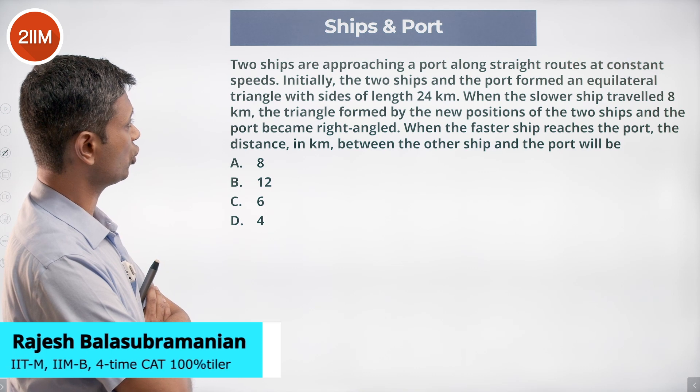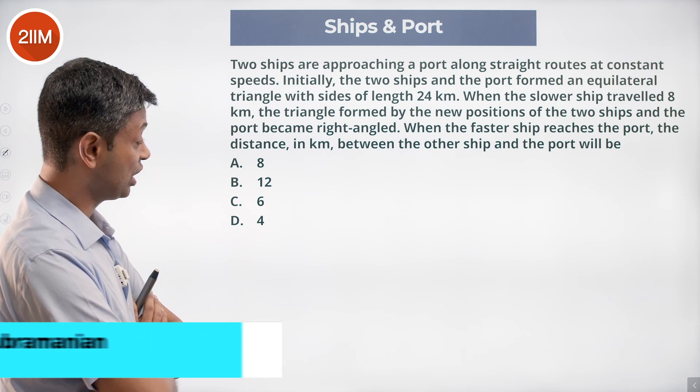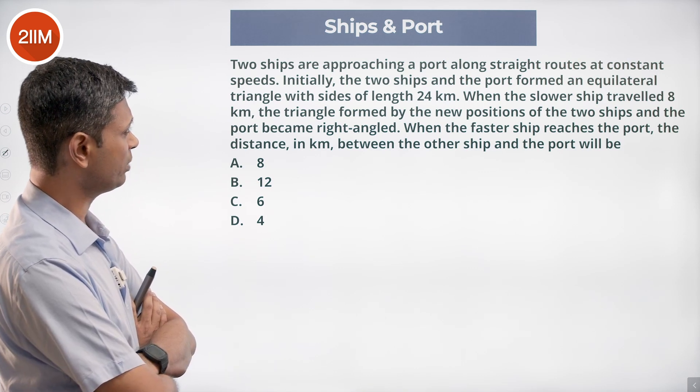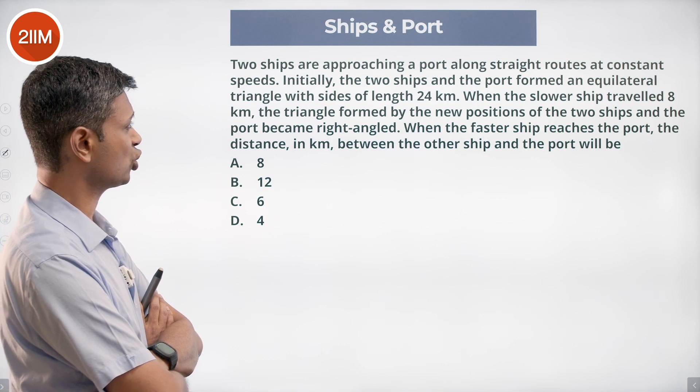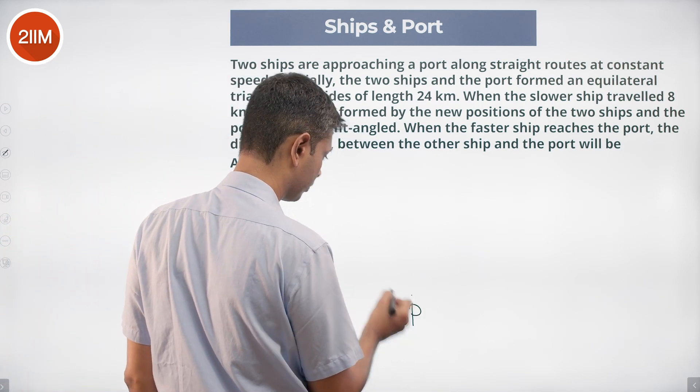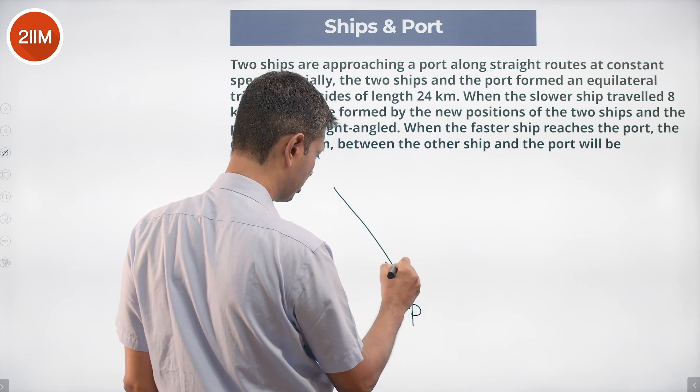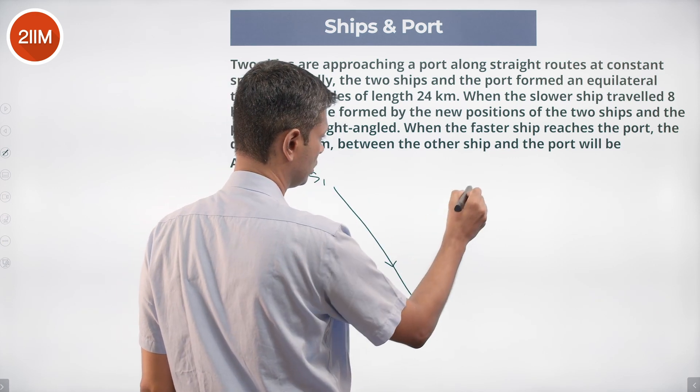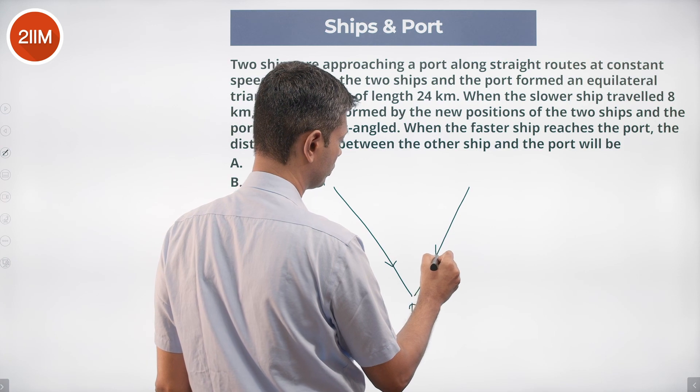Two ships are approaching a port along straight routes at constant speeds. Initially, the two ships and the port formed an equilateral triangle with sides of 24 kilometers. Ship one is coming from here, ship two is coming from here, forms an equilateral triangle with sides of 24 kilometers.